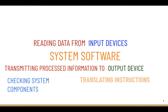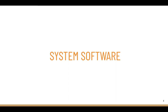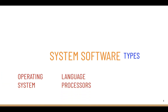Another task of system software is helping in translating instructions. All of us know that a computer understands only 0 and 1 — that means the machine language. So system software helps in translating from high-level language, meaning English-like language, to machine language. Translating instructions is one of the most important tasks of system software. The different types of system software are operating system, language processors, and device drivers.